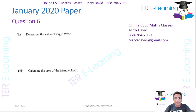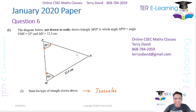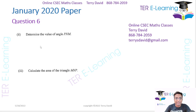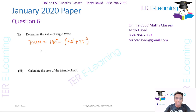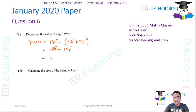Now they want us to determine the value of angle PNM. So one angle is 52 and this angle is also 52. We know that the interior angles of a triangle add up to 180. So angle PNM is 180 minus (52 plus 52), which is 180 minus 104, giving us 76 degrees.